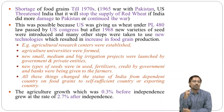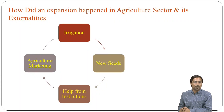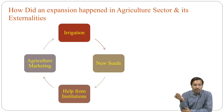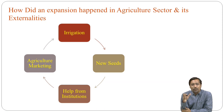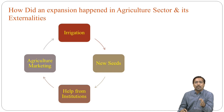How did the expansion happen in the agriculture sector? Various irrigation facilities were provided, new seed facilities, help from institutions like NABARD and RBI, government institutions, and agriculture marketing — making sure the product reaches the people. These are the four key ways expansion took place in the agriculture sector.